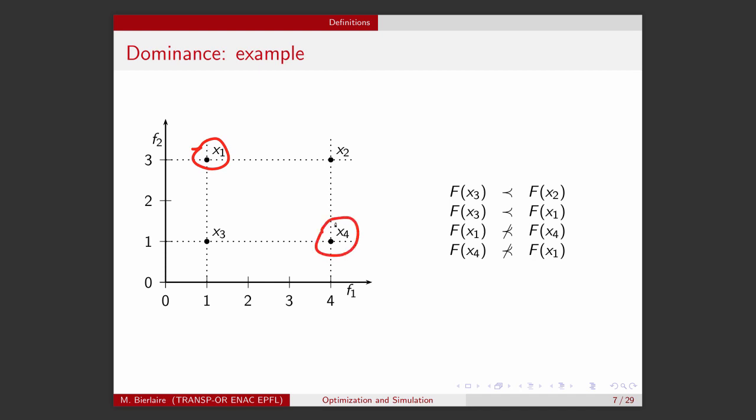Let's now compare X1 and X4. Well, X1 is better than X4 for objective 1, strictly better. And X4 is better than X1 for objective 2, strictly better. So, in this case, we cannot say that X1 dominates X4 because X4 is better for objective F2. And we cannot say that X4 dominates X1 because X1 is better than X4 for objective F1. So, this is an example of the non-completeness of this dominance relationship. So, X1 and X4 are such that none of them is dominating the other one.